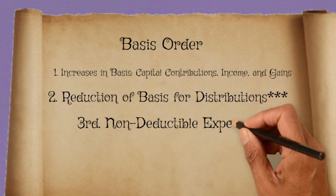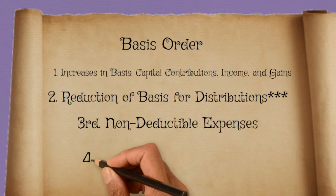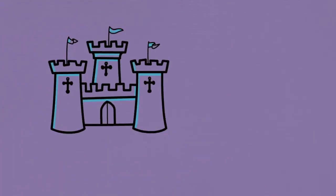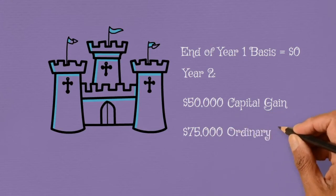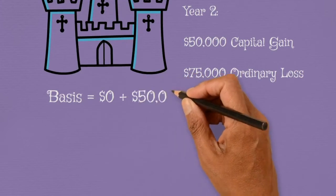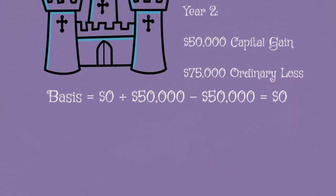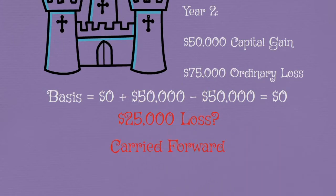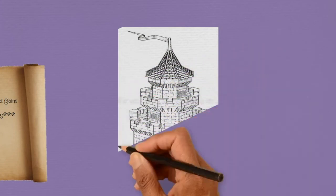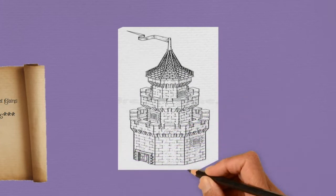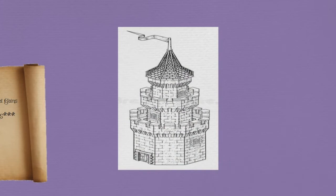Back to our ordering rules. Third is the subtraction of non-deductible expenses. We'll come back to this third step in a moment. And fourth is all other losses — losses, our second pillar. We ended year one with $0 basis after the distribution causing a $20,000 capital gain. In year two, we have $50,000 of capital gain and $75,000 of ordinary loss. So first we add our gain for $50,000, then deduct our losses. Remember, basis cannot go negative. So what happens to the remaining $25,000 of unused loss? Unlike distributions which result in taxable gain, the unused losses are carried forward to the next available year. Distributions coming before losses in the basis calculation is generally a good thing for a taxpayer, because the taxpayer would likely prefer any available basis to soak up the distribution before losses, since a suspended loss is usually preferable to current taxable gain.